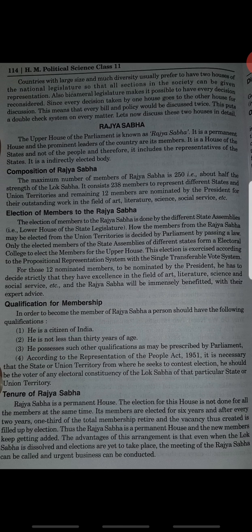Election of members to the Rajya Sabha is done by the different state assemblies. How members from union territories may be elected is decided by parliament by passing a law. Only the elected members of the state assemblies form an electoral college to elect the members of the upper house.